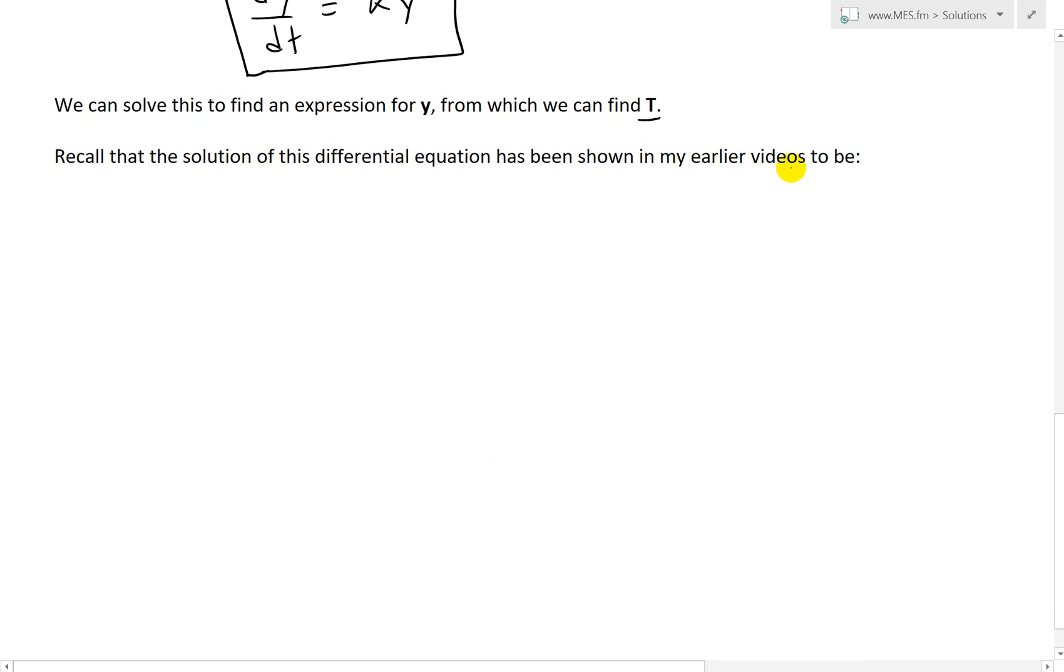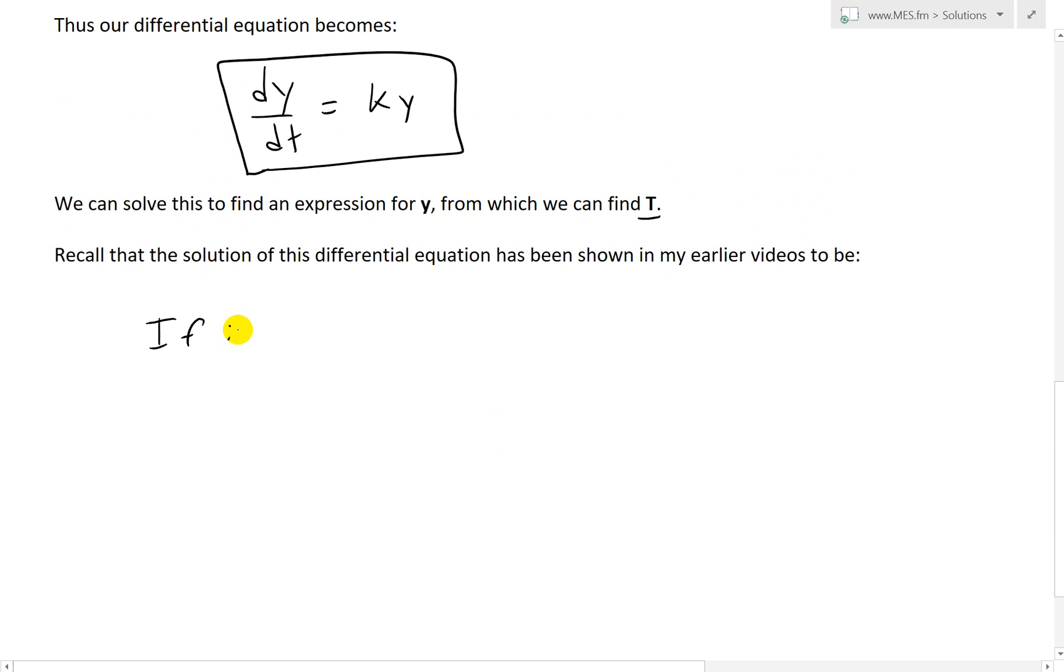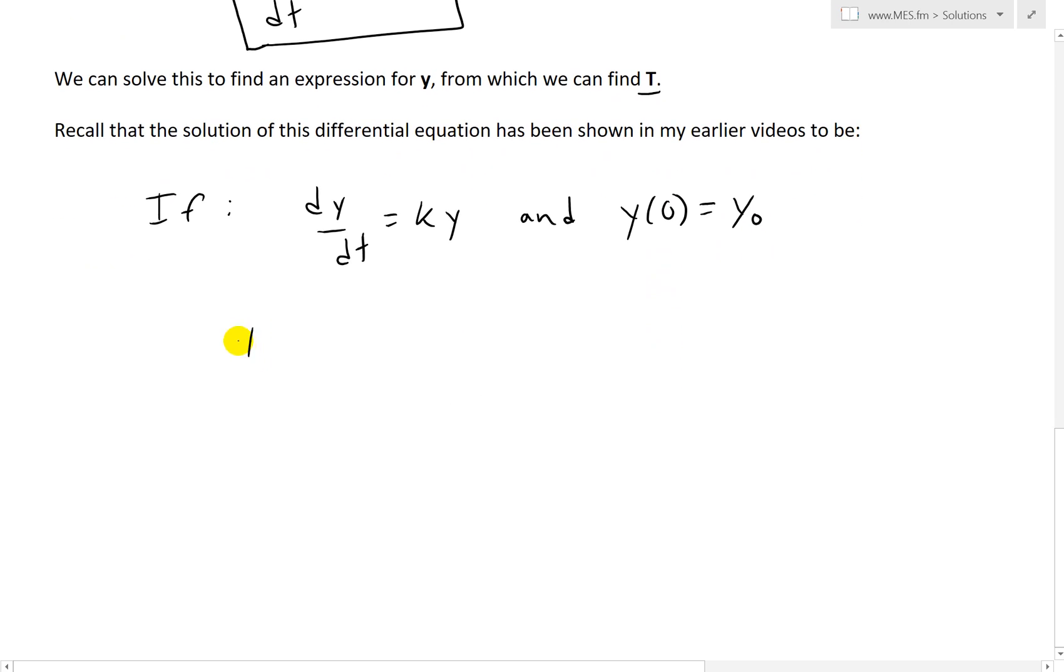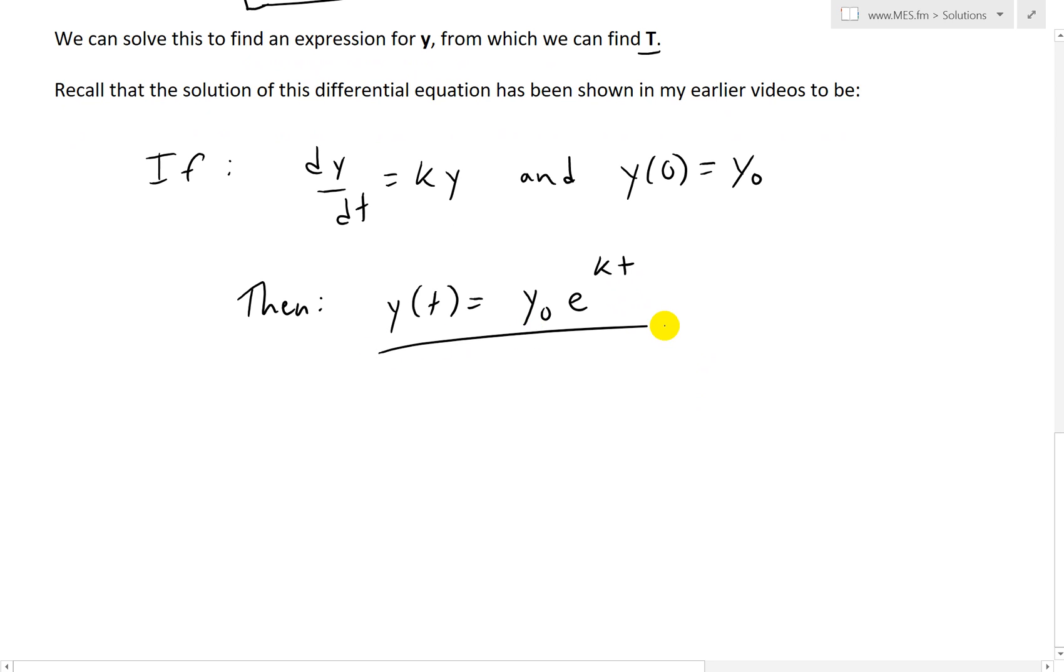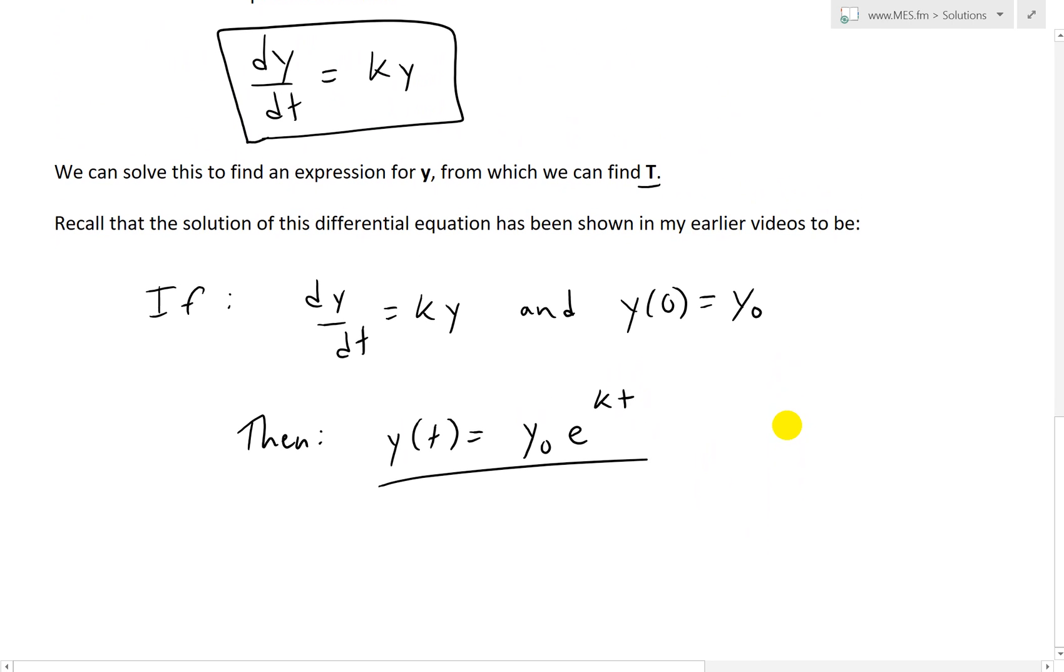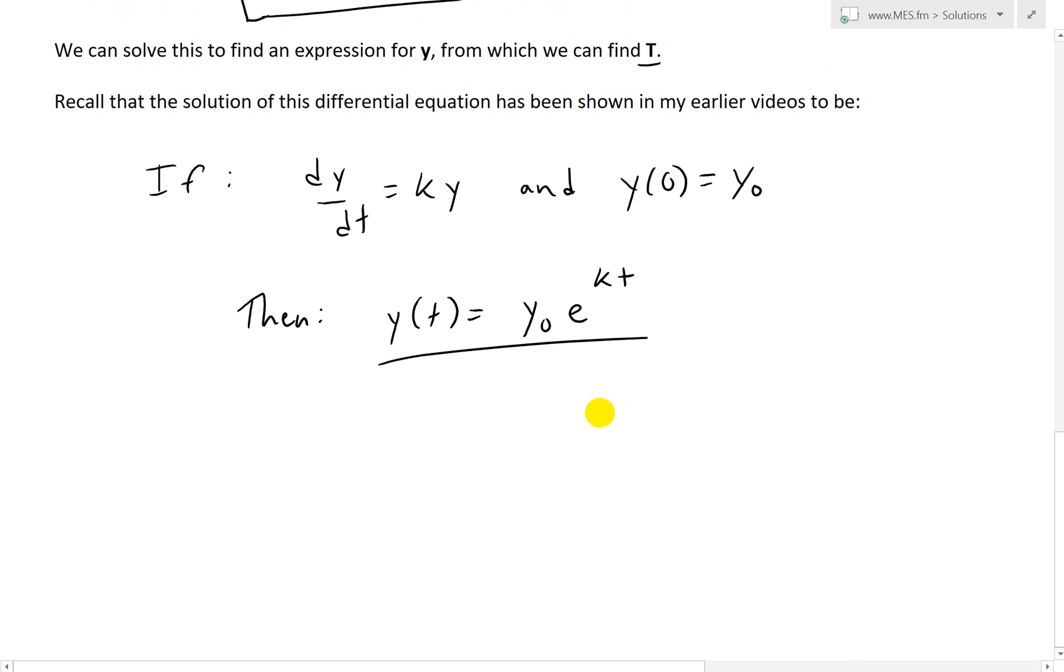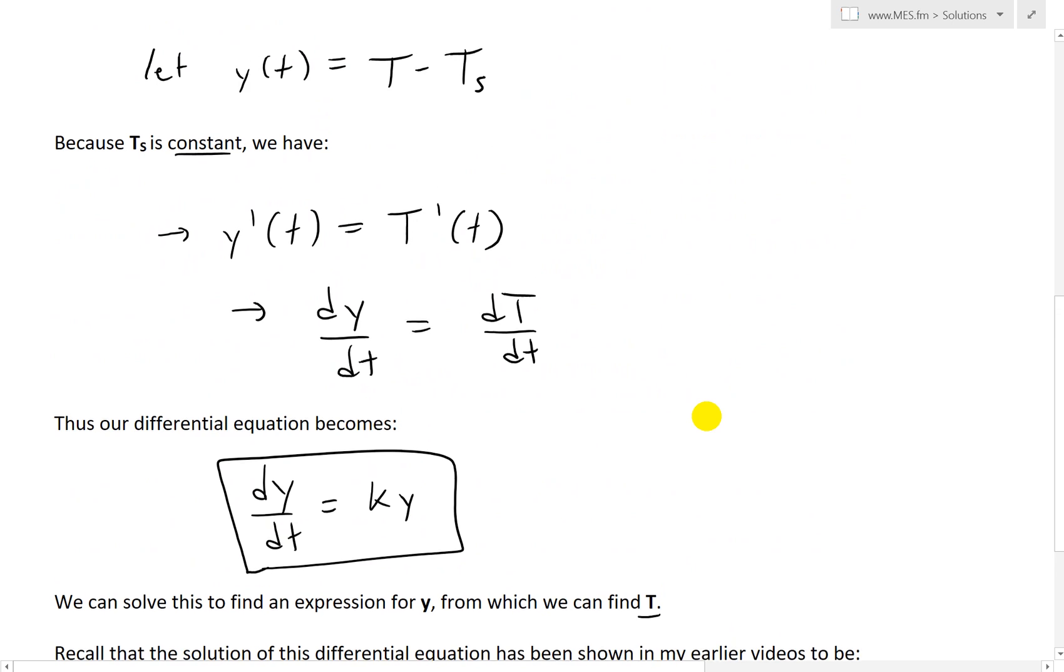Recall the solution of this differential equation has been shown in my earlier videos. For completeness, if we have dy over dt equals Ky with the initial condition y of 0 equals y naught, then the solution is an exponential function: y of t equals y naught times e to the power of Kt. From here we could rearrange to get the temperature T, as opposed to the difference y.